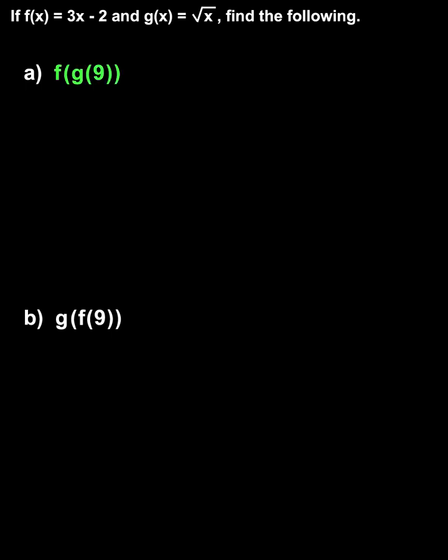To find f of g of 9, we first find g of 9. Since g of x equals root x, we can find g of 9 by substituting a 9 in for the x in the function, to get g of 9 equals root 9. The square root of 9 is 3, so g of 9 equals 3.